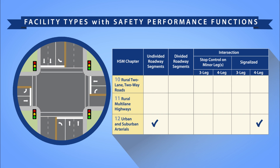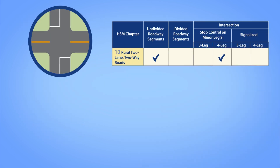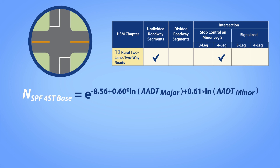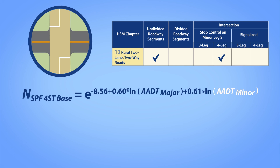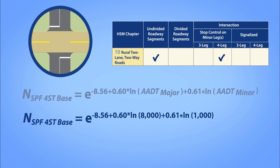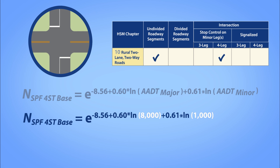After selecting an appropriate SPF, you apply it to estimate the long-term average crashes under base conditions. For example, the SPF for a four-legged, two-way, stop-controlled intersection on a rural, two-lane, two-way road is given by an exponential equation where AADT_major is the annual average daily traffic on the major road in vehicles per day, and AADT_minor is the annual average daily traffic on the minor road in vehicles per day. Assuming a major road AADT of 8,000 vehicles per day and a minor road AADT of 1,000 vehicles per day, you will calculate 2.9 predicted crashes per year from the SPF under base conditions.